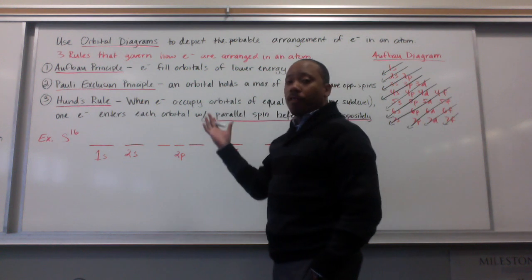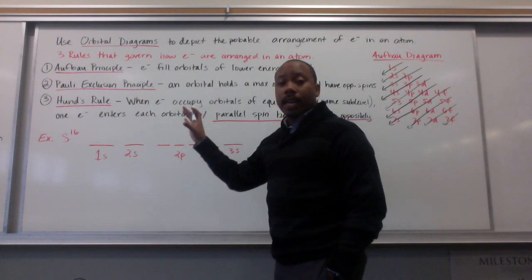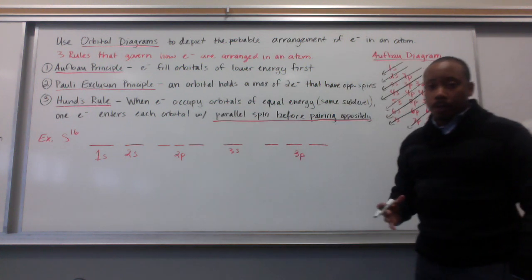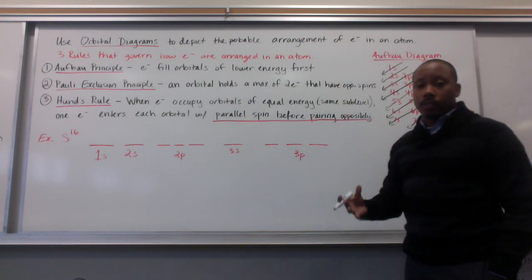Now, that's the Aufbau Principle. The second rule is our Pauli Exclusion Principle. This is simple. It says that an orbital can have a maximum of two electrons in it, and those electrons have opposite spins.